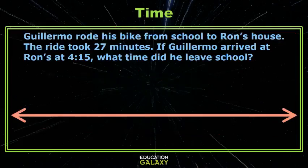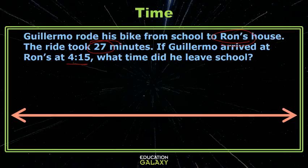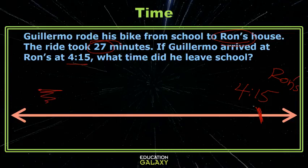Let's try another together. Guillermo rode his bike from school to Ron's house. The ride took 27 minutes. He arrived at Ron's at 4:15. So we're working from this arrival time at Ron's house at 4:15, but I left before. So I'm looking for some sort of time over here — I need to back up 27 minutes.